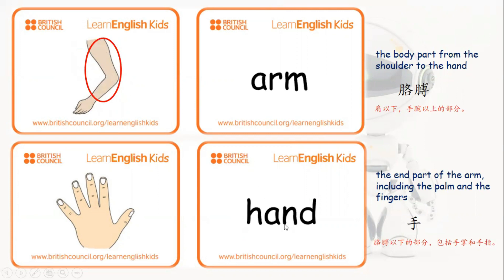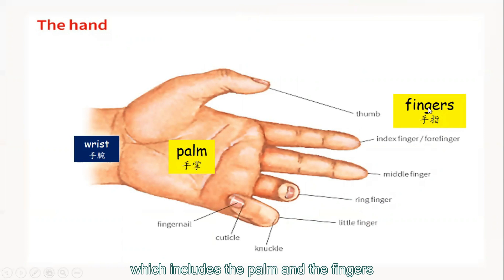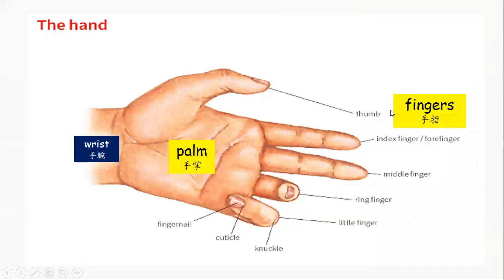Hand. The hand is the end part of the arm, including the palm and the fingers. 手就是胳膊以下的部分。Hand 包括手掌和手指。This gives you a clearer picture of the hand, which includes the palm and the fingers.